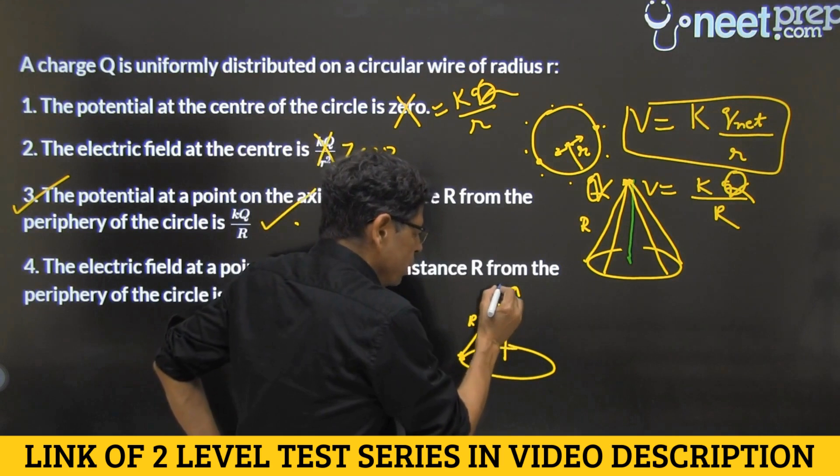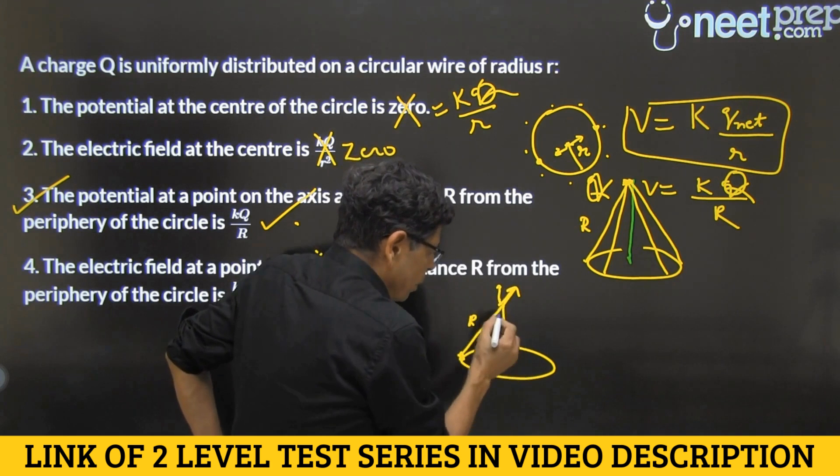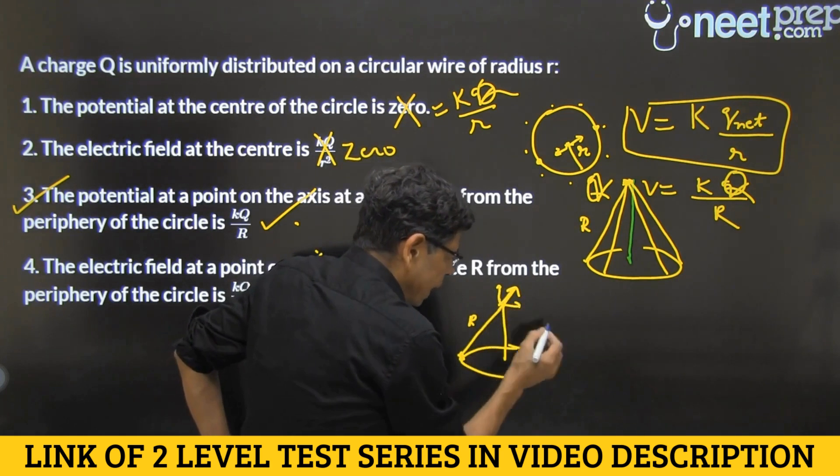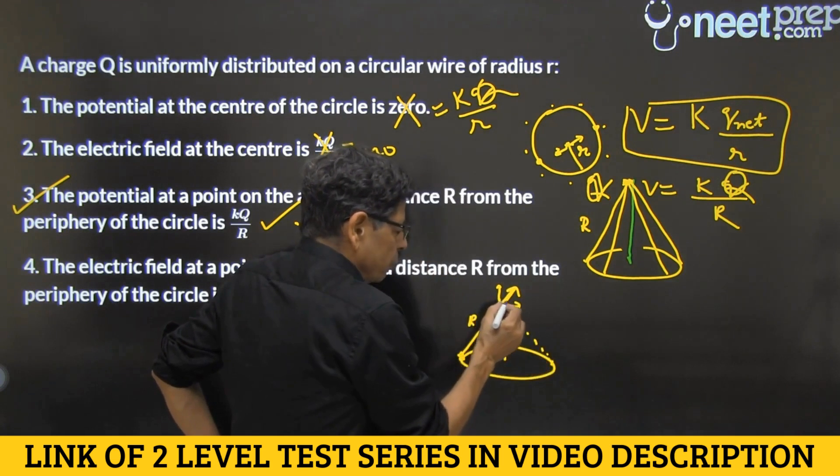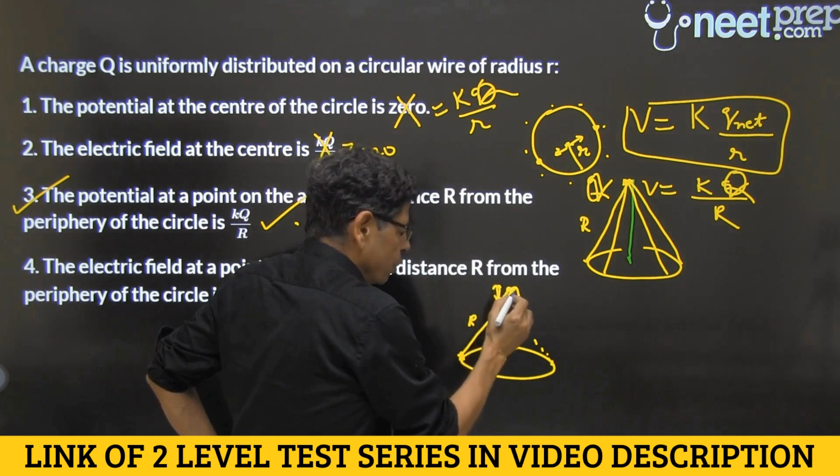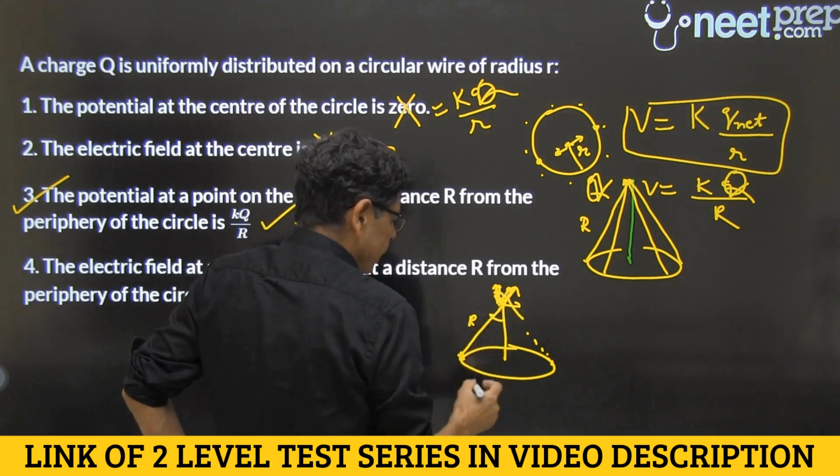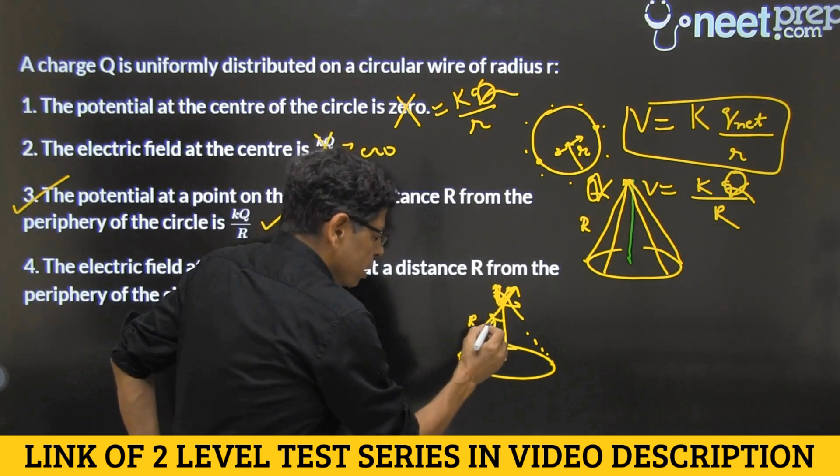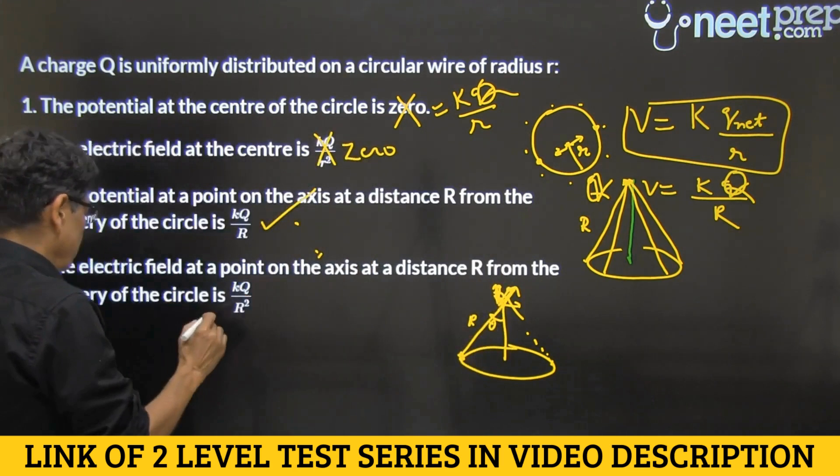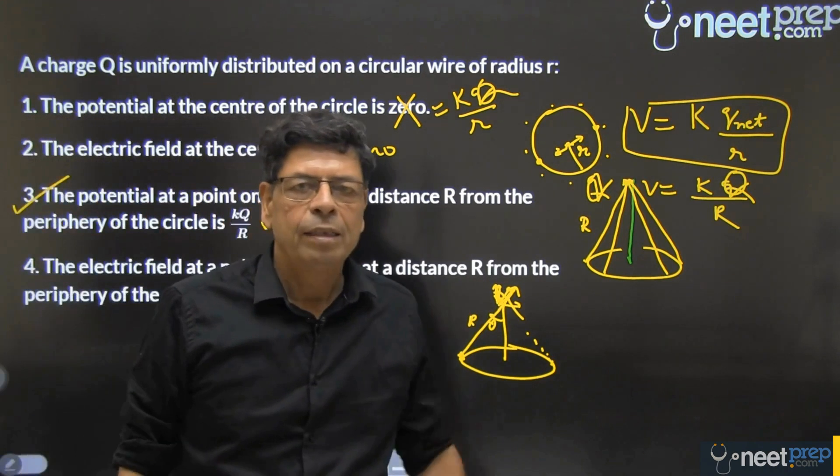But since only this component is required, you know, survives because the transverse component cancels from contribution coming from the other side and so this one cancels and only this one remains. So this will be KQ by R square but there is a component, cos theta component. So this angle theta, this angle theta, so the field this way would be cos of this needs to be multiplied to this expression and that is why this is wrong and option three is the correct answer.